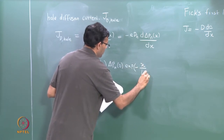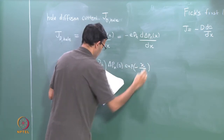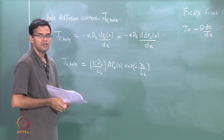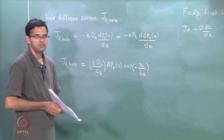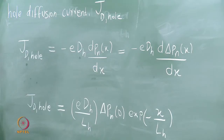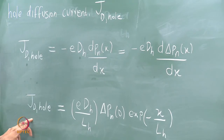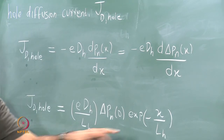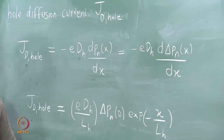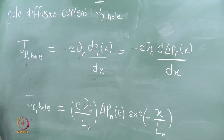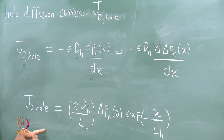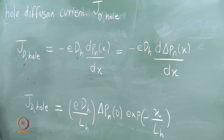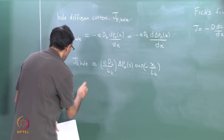We can substitute the expression for p_n that we got and do the differential. The hole diffusion current J_dh is nothing but e D_H over L_H times delta p_n(0) times exponential minus x over L_H. You can write a similar expression for the current due to the electrons. The current due to the holes is a function of distance, and the current due to the electrons will also be a function of distance, but the total current — the sum of these two — will be a constant.